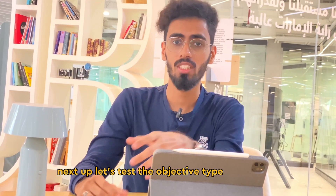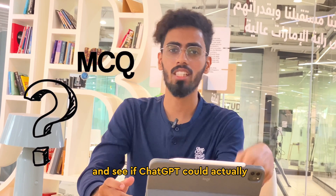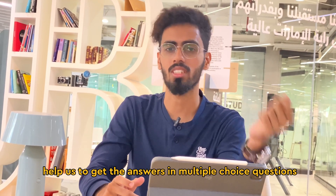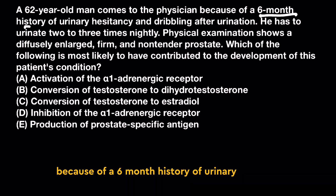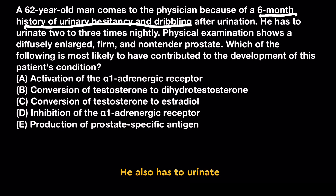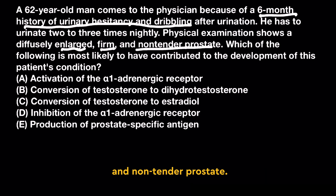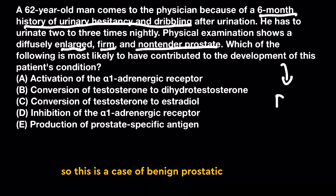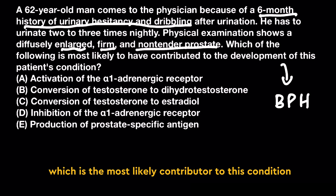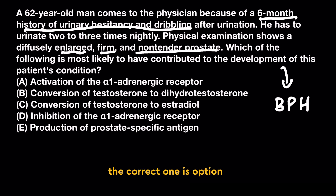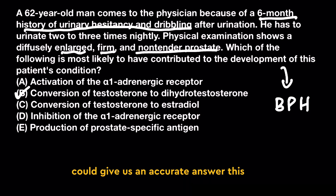Next, let's test objective type questions and see if ChatGPT could help us with multiple choice questions. We have an elderly man who has come to the physician because of a 6-month history of urinary hesitancy and dribbling. He also has to urinate 2 to 3 times during the night. Physical examination shows an enlarged, firm and non-tender prostate — this is a case of benign prostatic hyperplasia, a condition common amongst elderly males. The MCQ asks which is the most likely contributor to this condition. The correct answer is option B: conversion of testosterone to dihydrotestosterone. Let's see if ChatGPT gives the accurate answer.